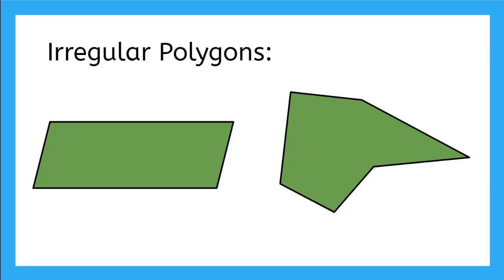This parallelogram is an irregular polygon. It doesn't have four congruent sides and angles. And this hexagon is an irregular polygon. As you can see, the six sides are definitely not all the same length.